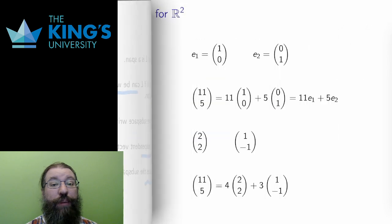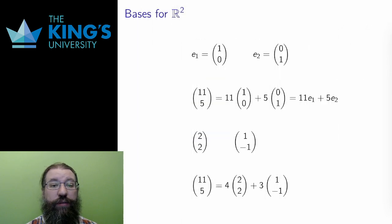And let me finish with talking about bases for Euclidean space itself. ℝ² has a standard basis of the axis vectors, (1,0) and (0,1). The usual notation for these is E1 and E2. Any vector can be written as a linear combination of E1 and E2. Take (11,5), for example.